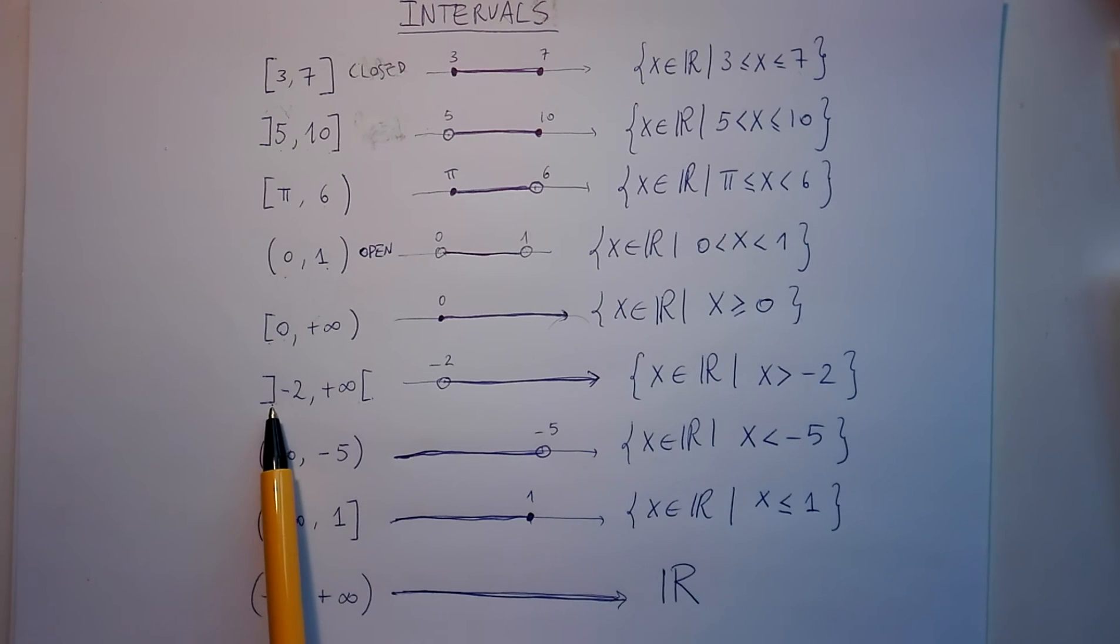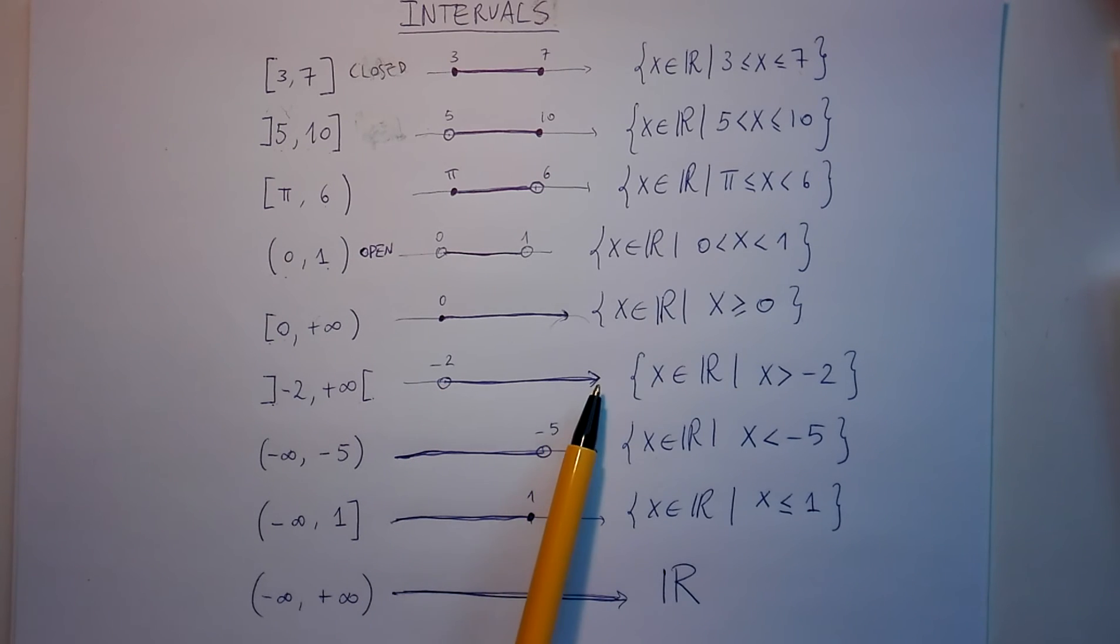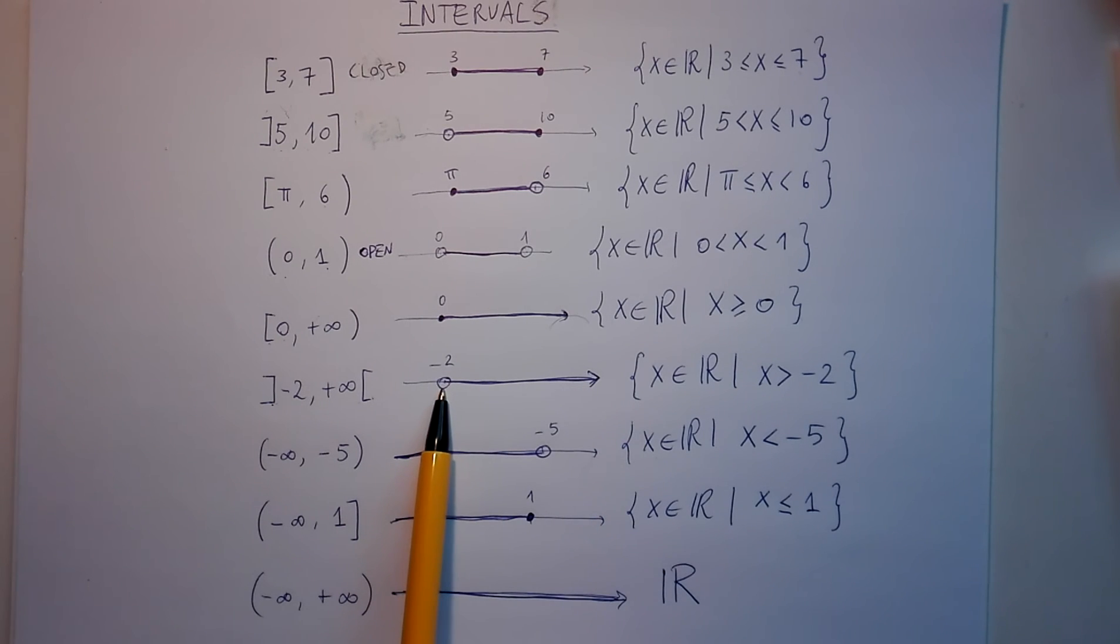Or we can have from minus two to plus infinity, where plus infinity is excluded, as I told you, and also minus two in this case is excluded. That means all the numbers from minus two up to infinity, excluding minus two.